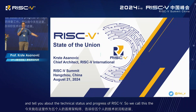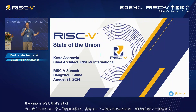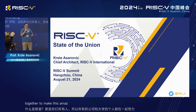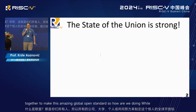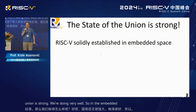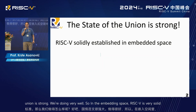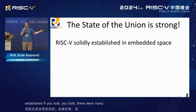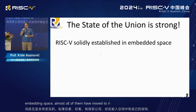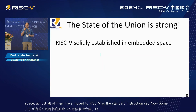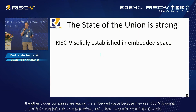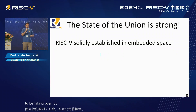We call this the State of the Union. What is the Union? Well, that's all of you — all the companies, the universities, individuals, all working together to make this amazing global open standard. So how are we doing? Well, the State of the Union is strong. In the embedded space, RISC-V is very solidly established. Many companies who had their own architecture in the embedded space have almost all moved to RISC-V as the standard instruction set. Some bigger companies are leaving the embedded space because they see RISC-V is going to be taking over.